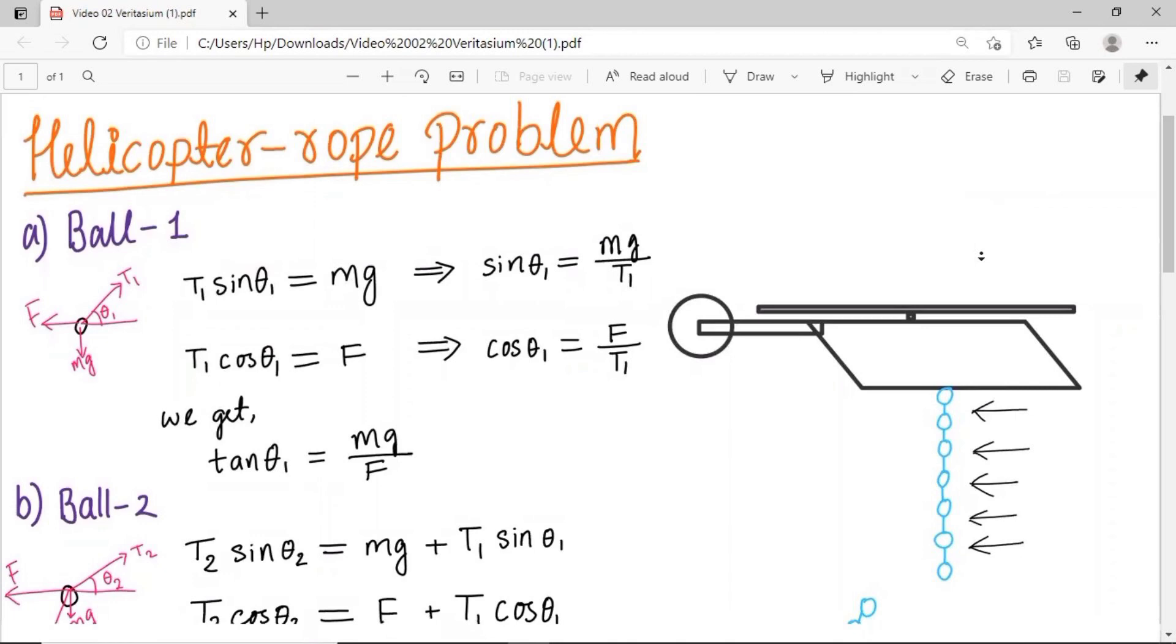Let's see the forces acting on the lowermost ball. There is mg downwards, air drag F towards left, and tension T₁ in upward right direction at an angle θ₁ with horizontal. Here's some math which you can understand.